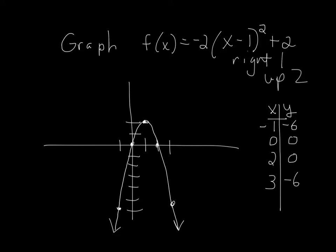And that's really all we can do to a function. There are four transformations: left or right movement, up and down movement, expanding or contracting — opening up more or less — and flipping. If there's a negative in front it flips; if there's no negative it stays in the normal orientation. Hope that helps — work hard, be nice, see you soon.